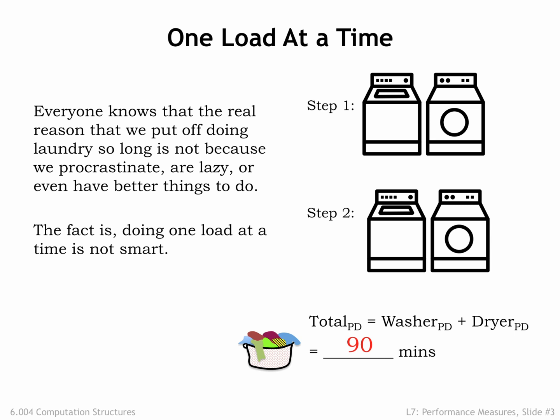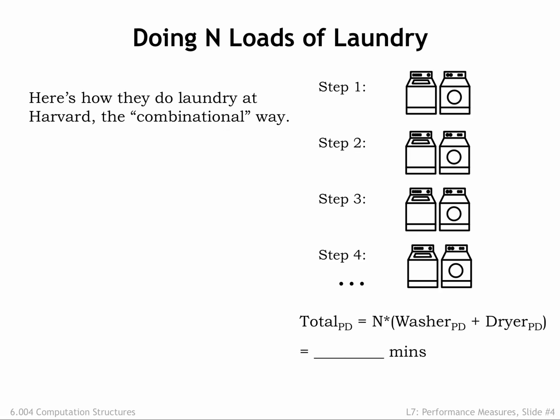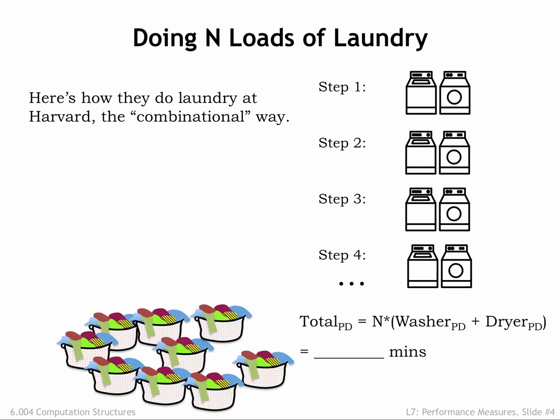Now let's think about doing N loads of laundry. Here at MIT, we like to make gentle fun of our colleagues at the prestigious institution just up the river from us. So here's how we imagine they do N loads of laundry at Harvard. They follow the combinational recipe of supplying new system inputs after the system generates the correct output from the previous set of inputs. So in step one, the first load is washed, and in step two, the first load is dried, taking a total of 90 minutes. Once those steps are complete, Harvard students move on to step three, starting the processing of the second load of laundry, and so on. The total time for the system to process N laundry loads is N times 90 minutes.